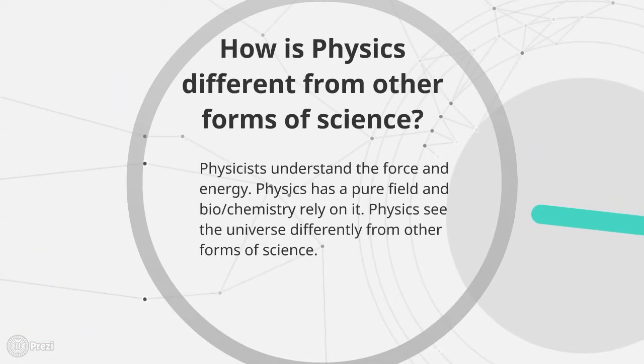How is physics different from other forms of science? Physicists understand the force and energy. Physics has a pure field and biology and chemistry rely on it. Physics see the universe differently from other forms of science.